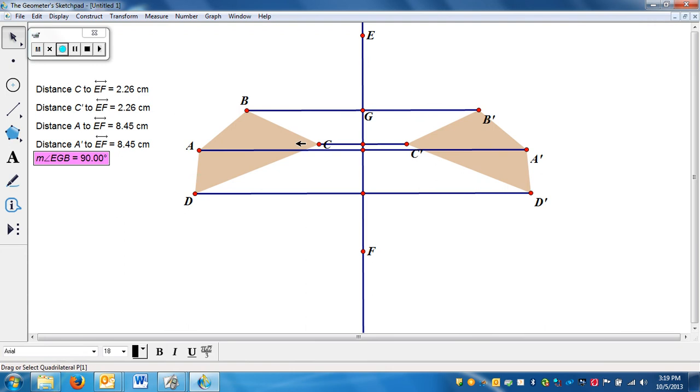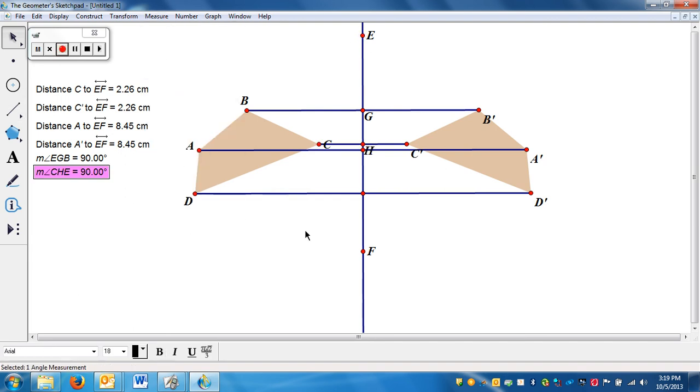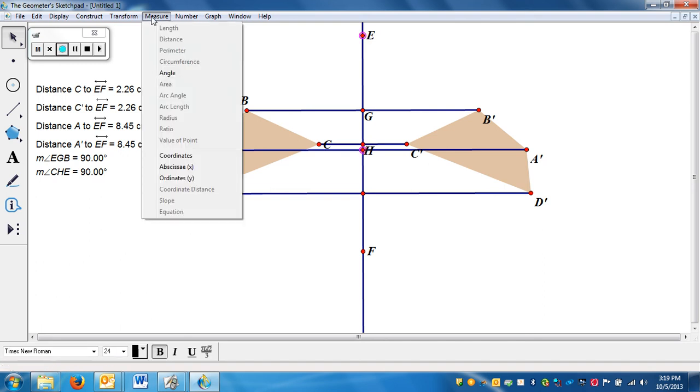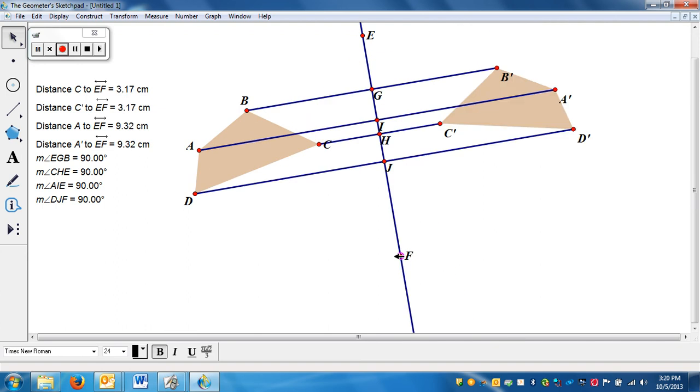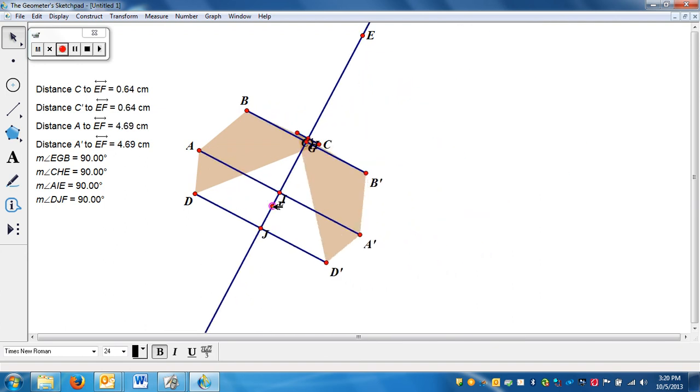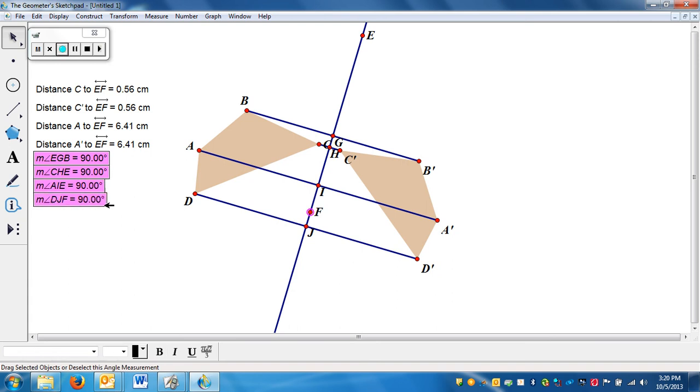The angle - notice it's 90 degrees. I can measure a few more angles here - they're all 90. So that tells you when you do a reflection you need to make sure it's perpendicular to the line of reflection. Notice I can move my line of reflection to change what the reflection looks like and it stays 90 the entire time.